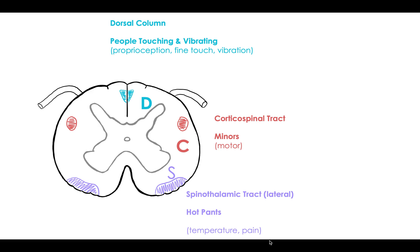And so then we can remember that the spinothalamic tract is the only tract that crosses at the spinal cord, whereas dorsal column and corticospinal tract will cross further up in the medulla.